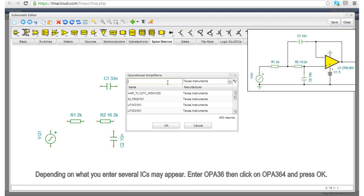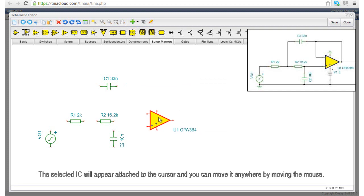Depending on what you enter, several ICs may appear. Enter OPA36, then click on OPA364 and press OK. The selected IC will appear attached to the cursor and you can move it anywhere by moving the mouse.